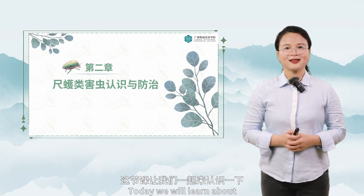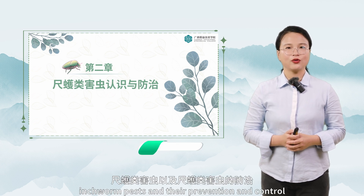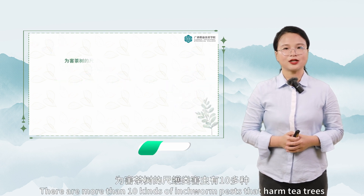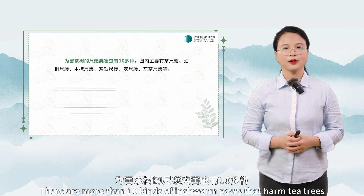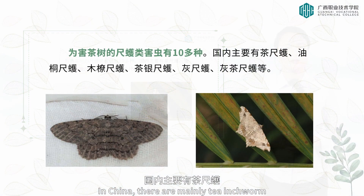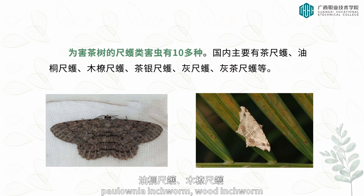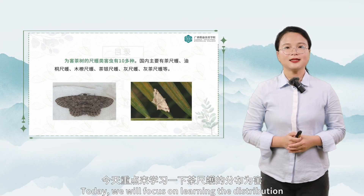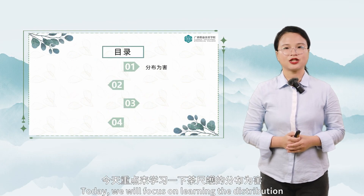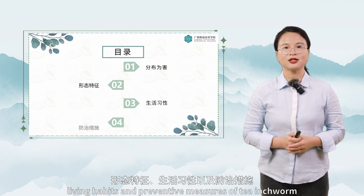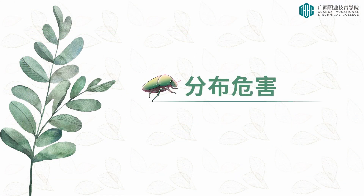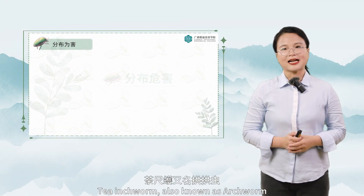Hello everyone. Today we will learn about inchworm pests and their prevention and control. There are more than 10 kinds of inchworm pests that harm tea trees in China, including tea inchworm, Polonia inchworm, wood inchworm, tea silver inchworm, gray inchworm, gray tea inchworm, and so on. Today we will focus on the distribution, morphological characteristics, living habits, and preventive measures of tea inchworm.